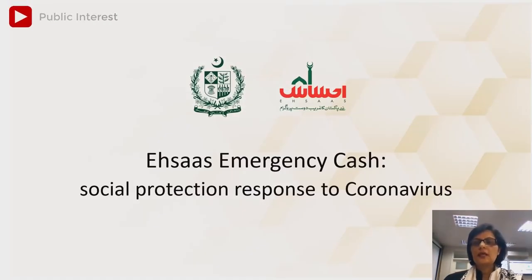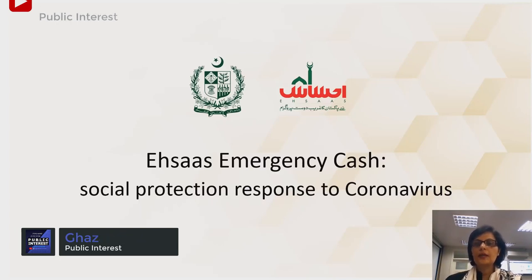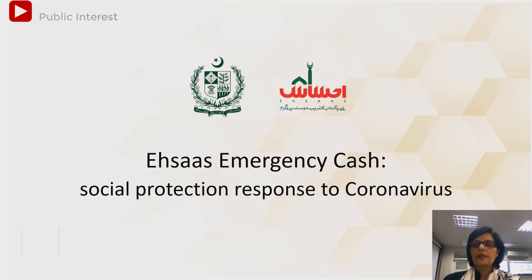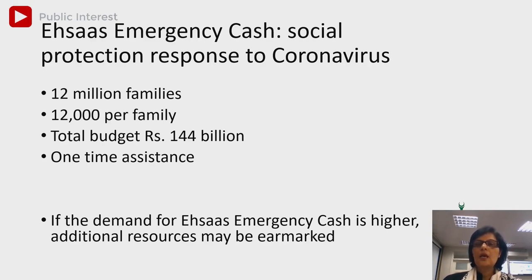Hello everyone. There is a lot of interest in emergency cash, so I thought I will explain a slide deck so that everything will be clear about the criteria of the beneficiaries and the payment. Very quickly: the cabinet approved an emergency cash package for 12 million families, 12,000 per family, with a total budget of 144 billion. This is a one-time assistance in response to the coronavirus situation.